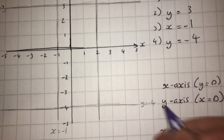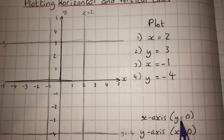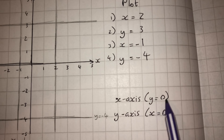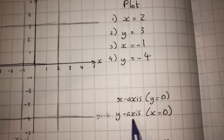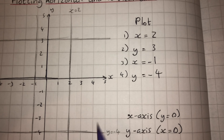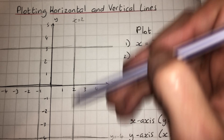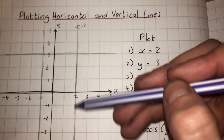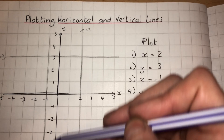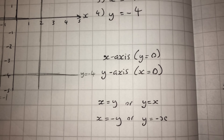A couple of things to note: the x-axis itself has the equation y equals 0, and the y-axis has the equation x equals 0. That might sound confusing, but think about it — when we did x equals 2, that's a vertical line at x equals 2. If we do x equals 0, we get the line perpendicular to the x-axis at zero, which is of course the y-axis. And it works the other way around for the y-axis.